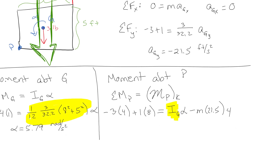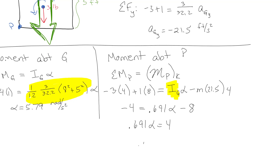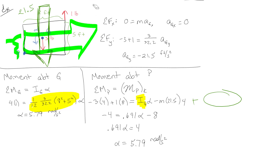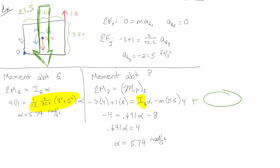Working through the math: the left side gives minus 4. On the right we get 0.691·alpha minus 8, so 0.691·alpha equals 4, giving alpha equals 5.79 radians per second squared — the same answer as before. Working the two approaches side by side helps make the method clear. The key thing to remember is that if there's acceleration in both directions, you include both kinetic moment terms, each being mass times acceleration times perpendicular distance, so everything has units of a moment.